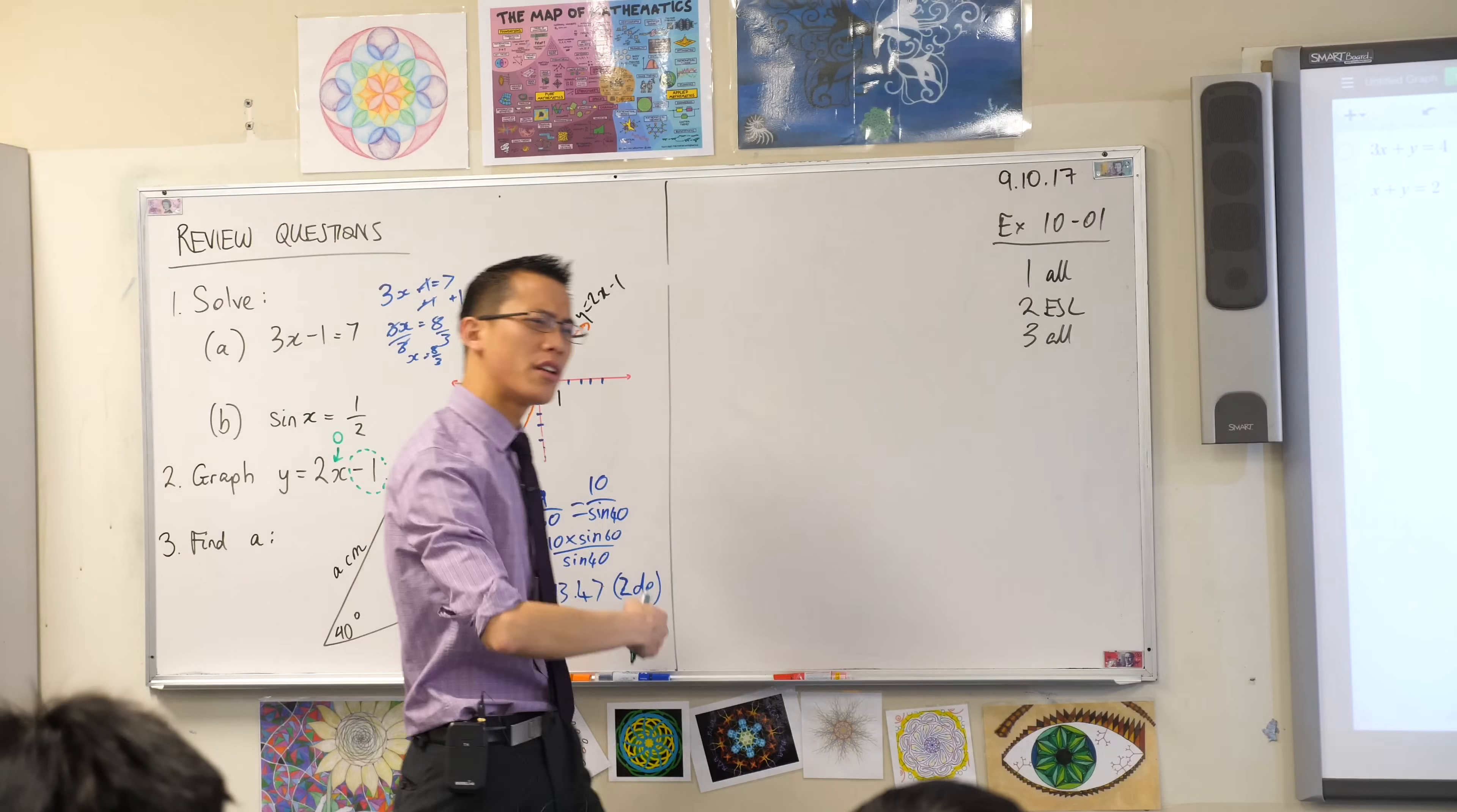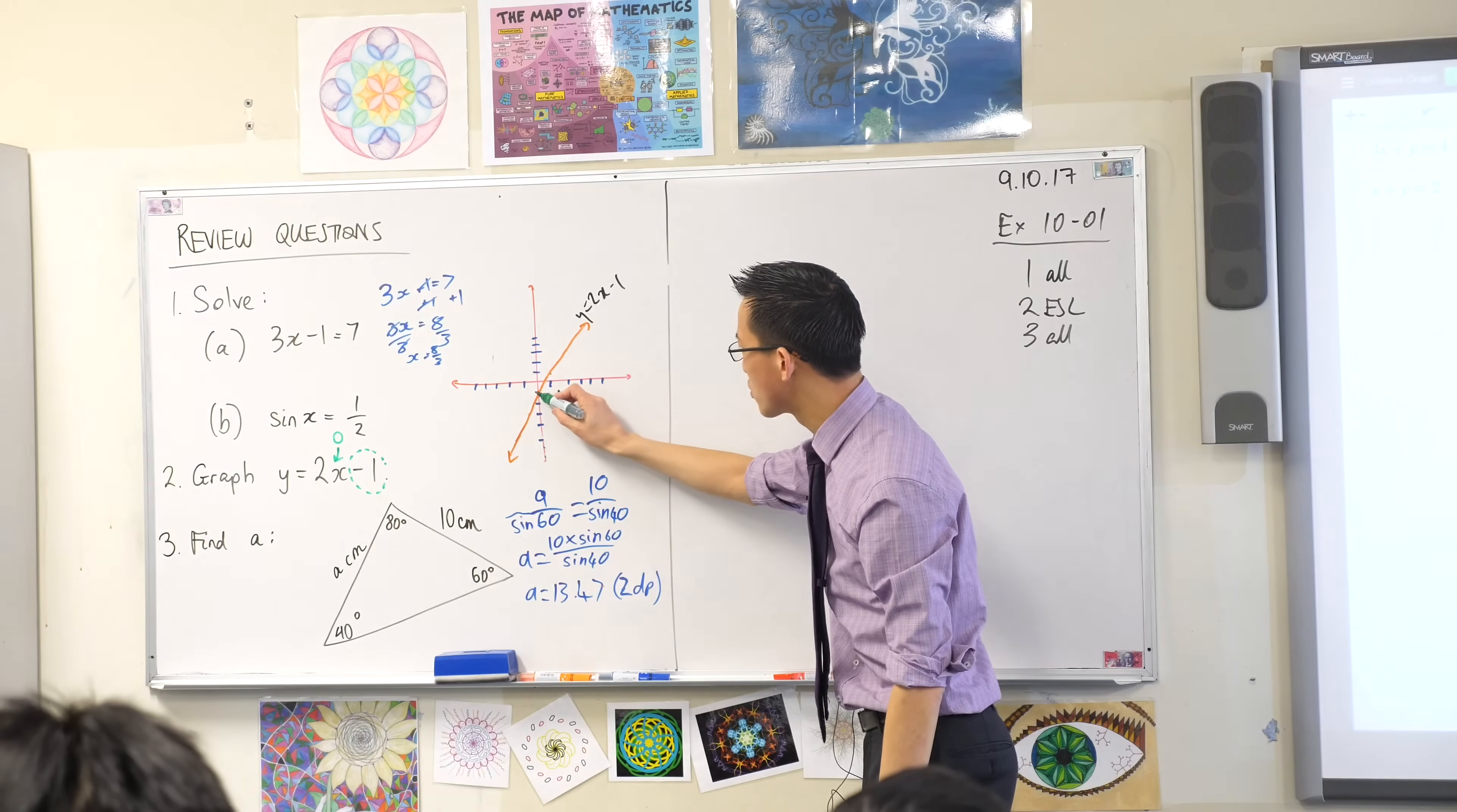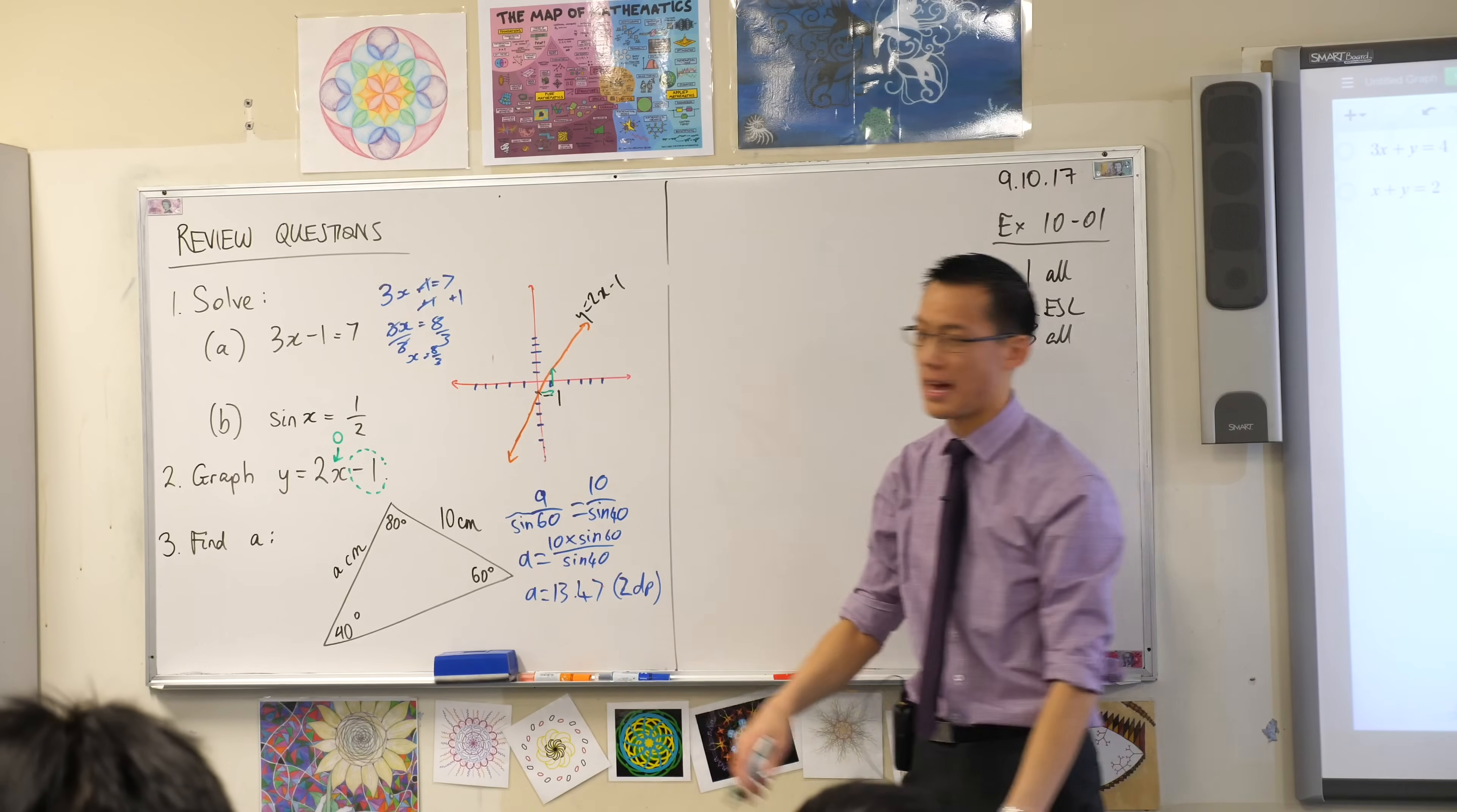What about the 2? We know what the negative 1 does. What does the 2 do? Makes it steeper. Yeah, very good. So it tells you the gradient. It makes it steeper, which is why if we went across one unit like this, one unit to the right, you'd go up two units, and that's where you are.